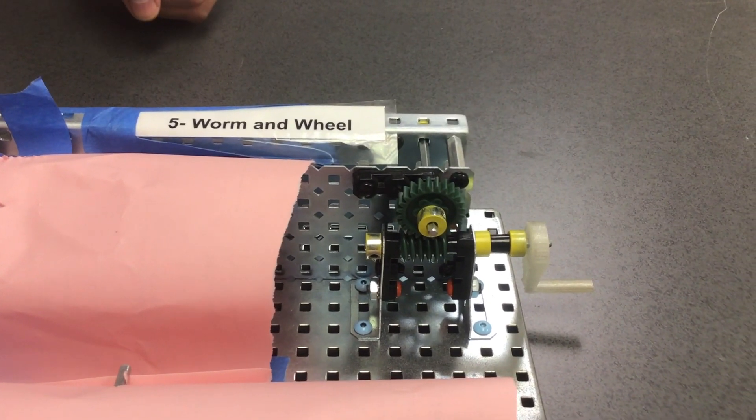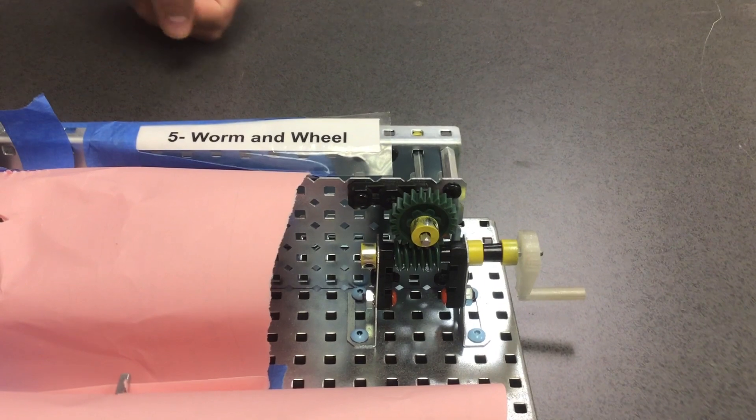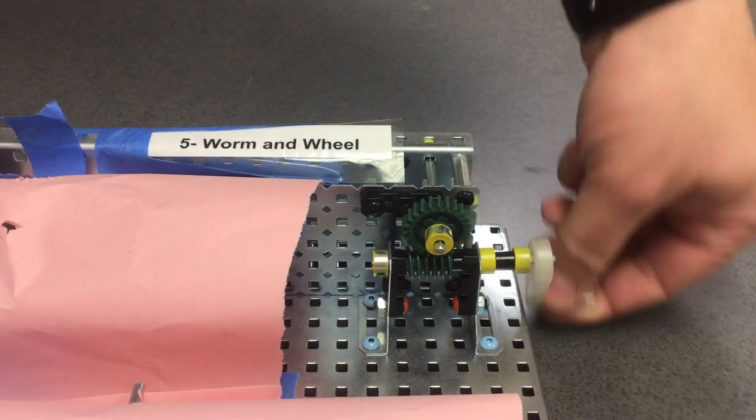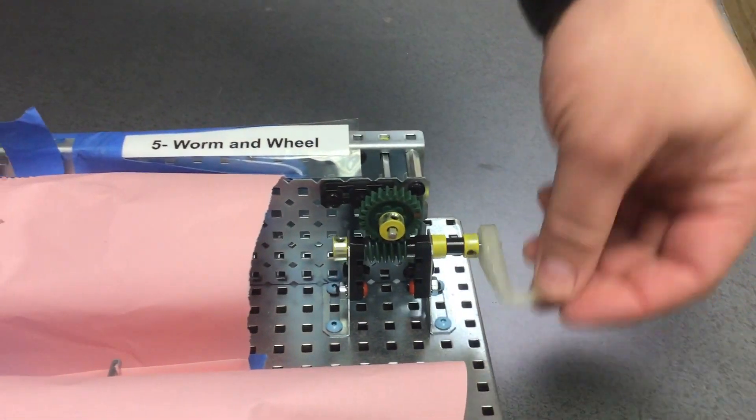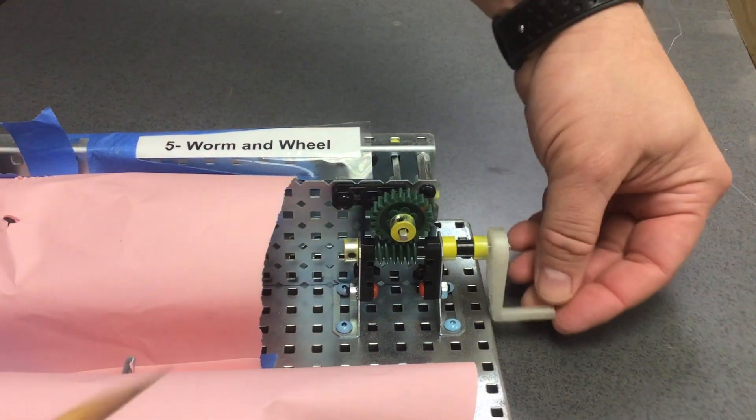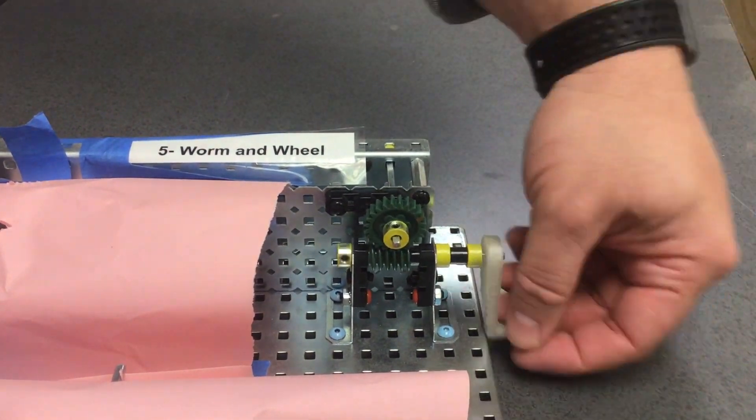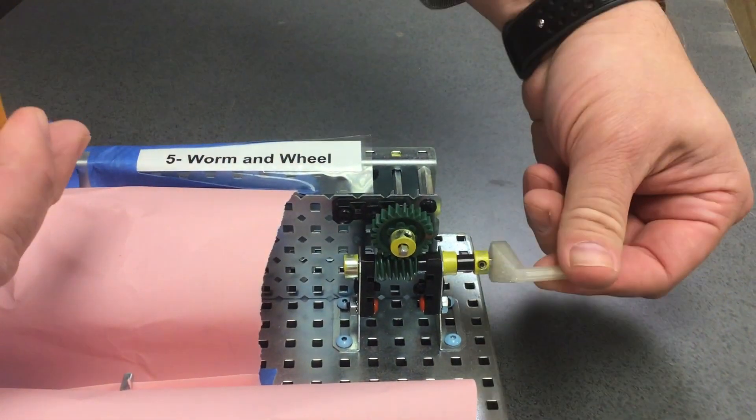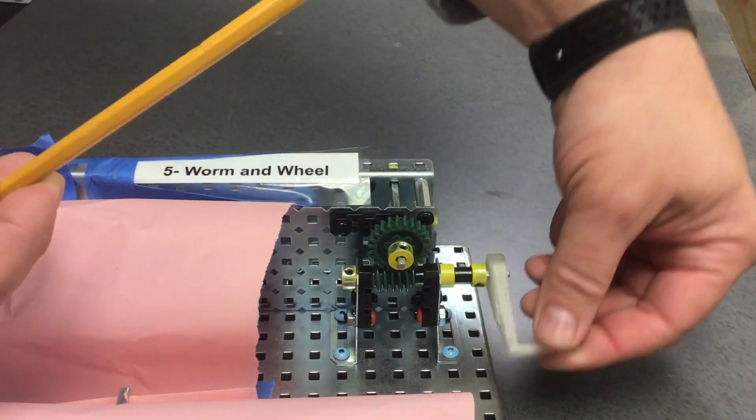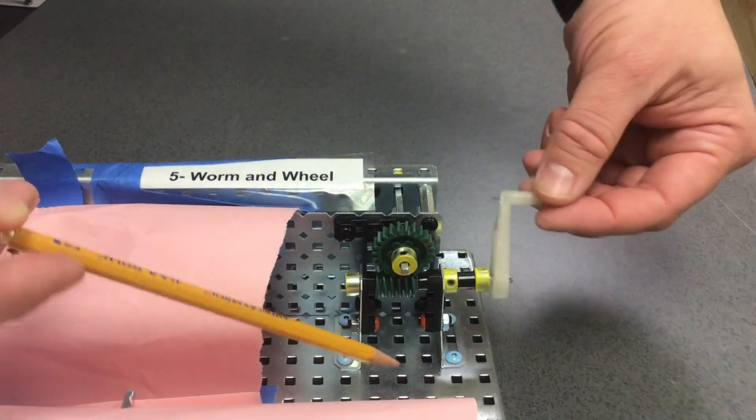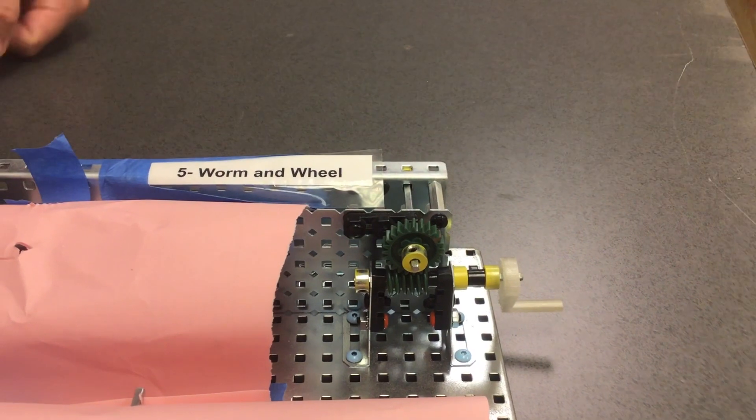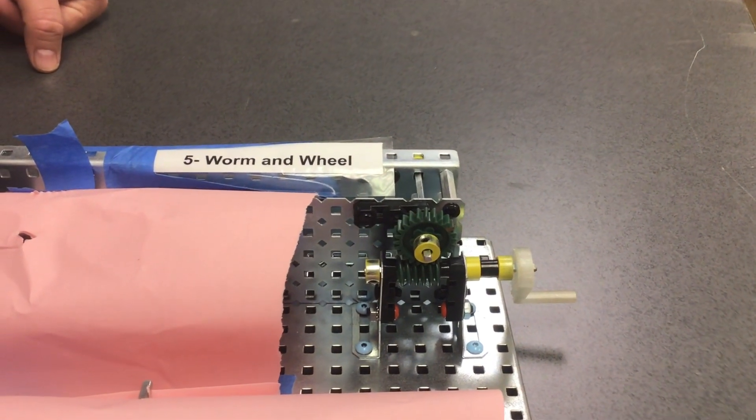So the direction of travel however is reversible. I can go the other way. Where would I use this? Maybe on a drawbridge. I turn this to raise the drawbridge and then after it's raised I turn it the other way to lower the drawbridge. This is the worm and wheel assembly.